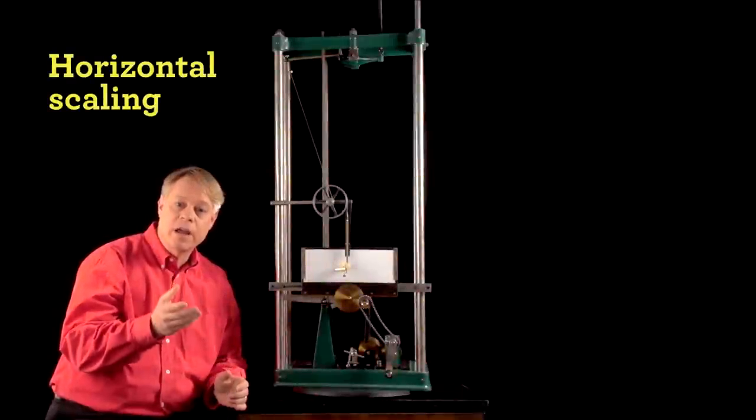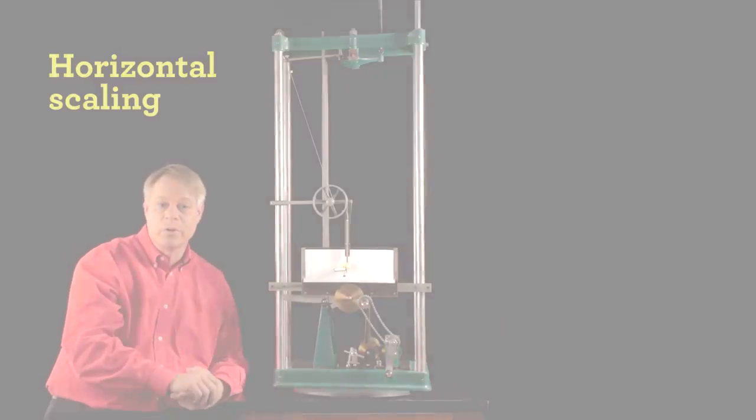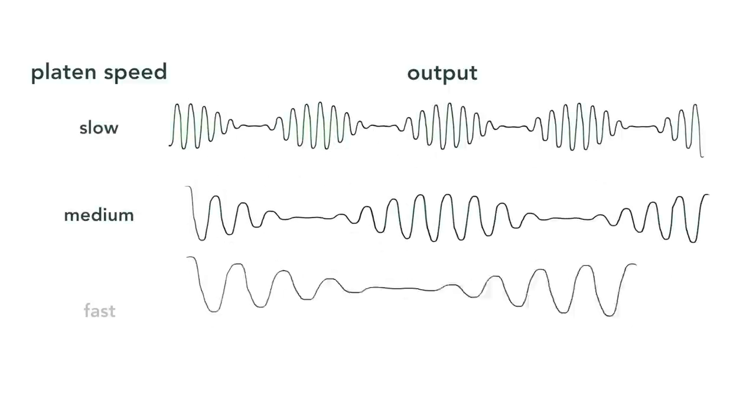The amount of horizontal scaling depends on how fast this platen moves as the crank is turned. The platen can move slowly, at a medium pace, or very fast.